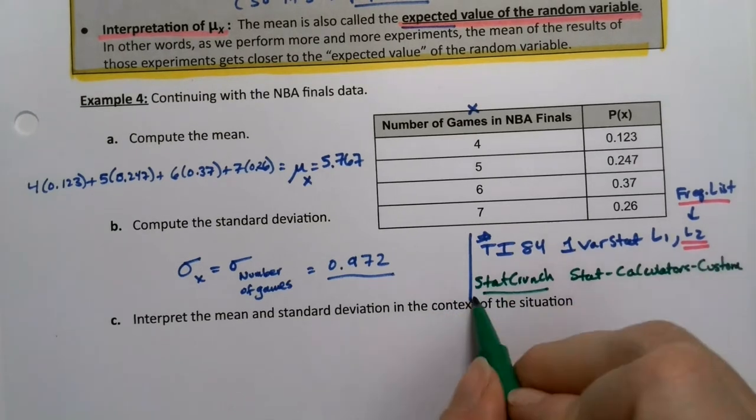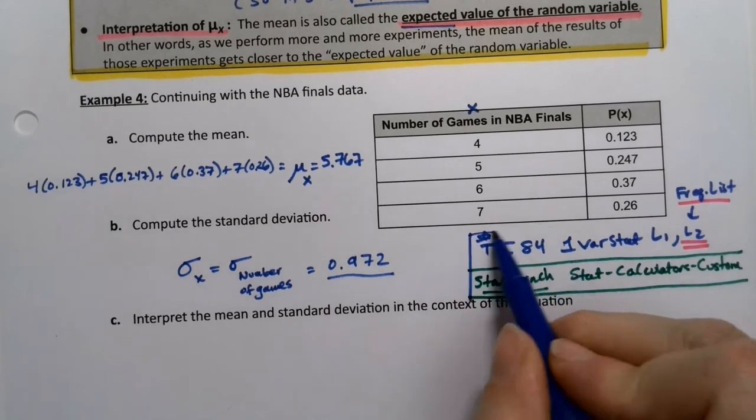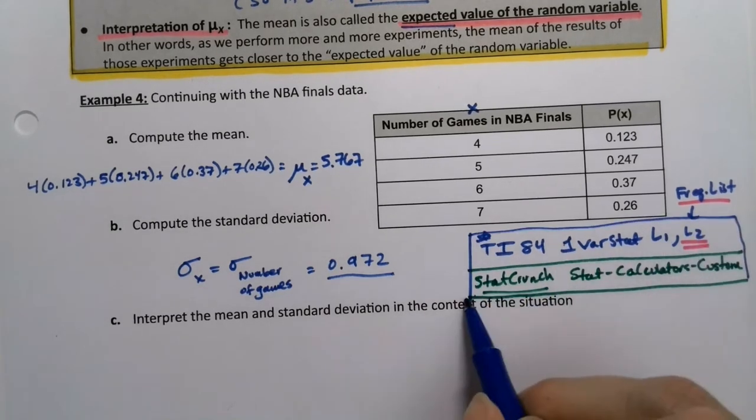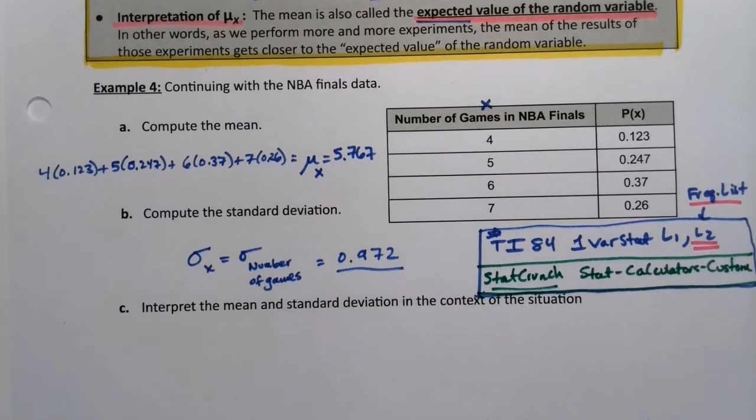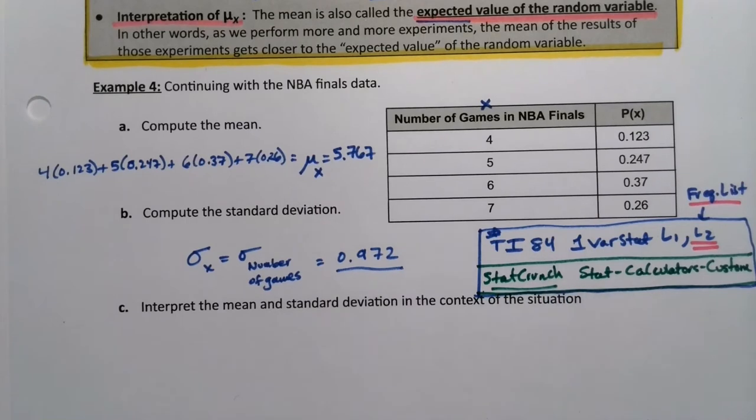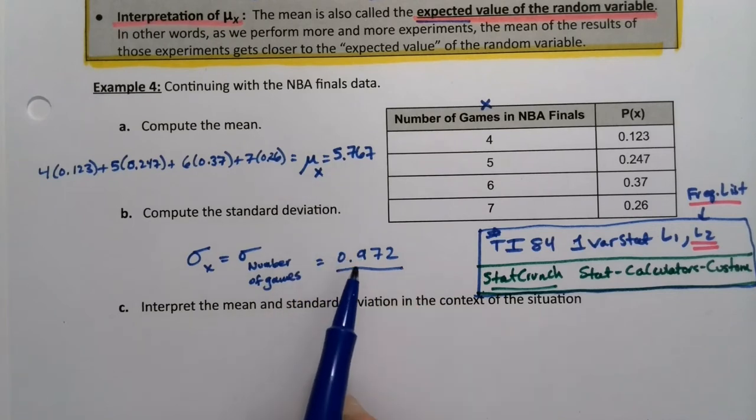So those are the two options that you're going to use. Of course, you have to have the table turned in, so it has to be that you've written the table either in one variable, or excuse me, in STAT EDIT on the calculator, or on the StatCrunch spreadsheet. But one way or another, it has to be there. So this is the mean number of games, and this is the σ for the number of games.